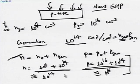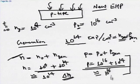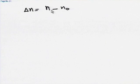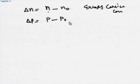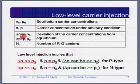Delta n is the excess carrier concentration — n minus n_0, the deviation from equilibrium. Similarly, delta p is p minus p_0. Low level injection means that after illumination, my p-type semiconductor remains p-type. The minority carrier concentration, even after increase, is still much smaller than majority carrier concentration. In this case (10¹⁴ minority carriers vs 10¹⁶ majority), p-type behavior does not change.